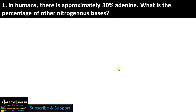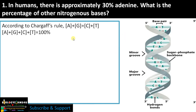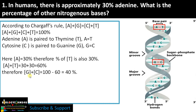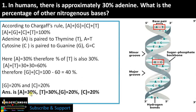Now moving into problems to find out base composition using Chargaff's rule. Question 1: In humans there is approximately 30% adenine — what is the percentage of other nitrogenous bases? Since A+T+G+C = 100%, and adenine always pairs with thymine, thymine will also be 30%. Altogether A+T = 60%. Therefore G+C = 100 − 60 = 40%. Guanine will be 20% and cytosine will also be 20%. Answer: A = 30%, T = 30%, G = 20%, C = 20%.